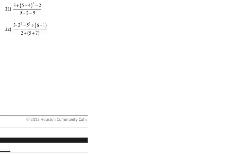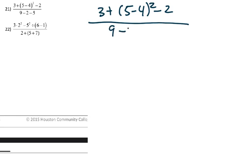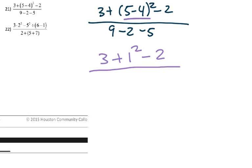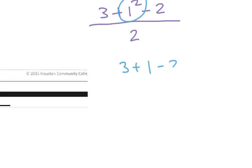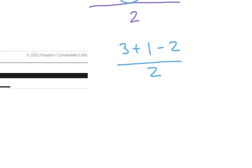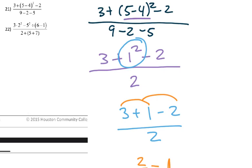Number twenty-one is 3 plus the quantity 5 minus 4 squared minus 2, all over 9 minus 2 minus 5. It's fine to clean up the numerator and denominator separately according to PEMDAS, then divide. Denominator: 9 minus 2 is 7, 7 minus 5 is 2. Numerator: 5 minus 4 is 1, so we have 3 plus 1 squared minus 2. Exponents: 1 squared is 1. Then 3 plus 1 is 4, 4 minus 2 is 2. So 2 over 2 is 1.